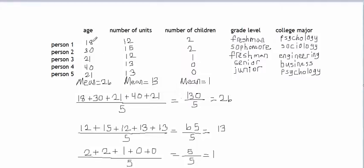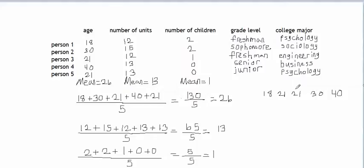Let's find the median of the data values in the age column. I put the data values in order from lowest to highest and the middle value is 21, so 21 is the median of this column of data.